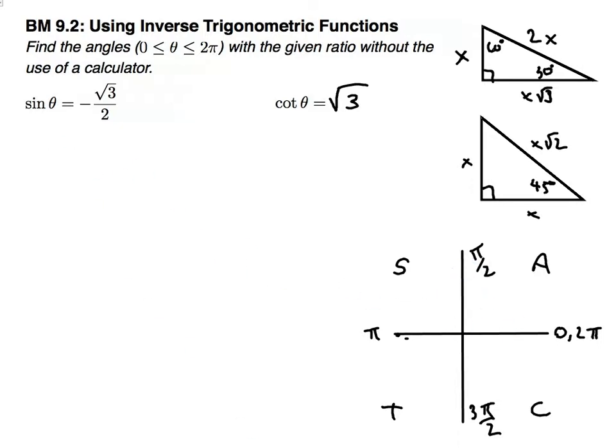First question asks, sine of theta is negative square root 3 over 2. Sine is negative, first off, in quadrants 3 and quadrant 4. Okay, because all are positive in quadrant 1, and sine is positive in quadrant 2. So sine is negative in quadrants 3 and 4. So the first thing we did was determine what quadrants we're in.